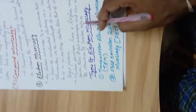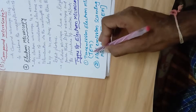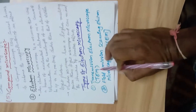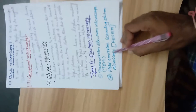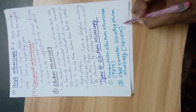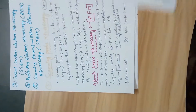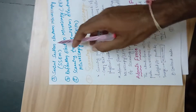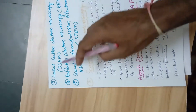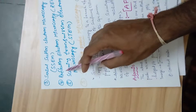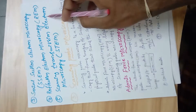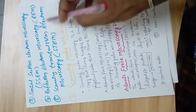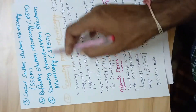Electron microscopy has various types. The first is transmission electron microscopy, called TEM, widely used in biology, topology, and biochemistry. The second is field emission scanning electron microscopy, called FESEM. The third is serial section electron microscopy, SSEM. The fourth is reflection electron microscopy, REM. The fifth is scanning electron microscopy, SEM. And scanning transmission electron microscopy, STEM.